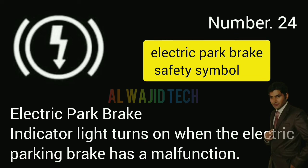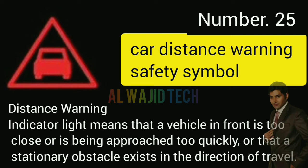Number twenty-four: Car electric park brake. The electric park brake indicator turns on when the electric parking brake has a malfunction. Number twenty-five: Car distance warning. The distance warning indicator means that a vehicle's front is too close, is being approached too quickly, or that a stationary obstacle exists in the direction of travel.